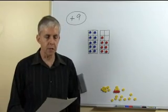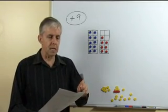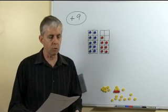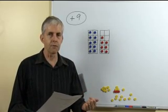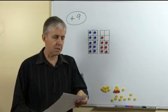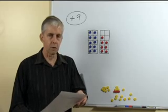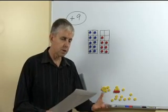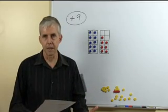The first of the worksheets, if you look at it you'll see that the number facts are in pairs, so we focus on adding 10 for the first one of each pair and then the same number added to 9. So the first example is 7 plus 10, followed by 7 plus 9, then we have 6 plus 10, 6 plus 9, and so on.